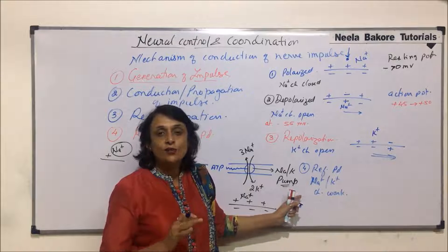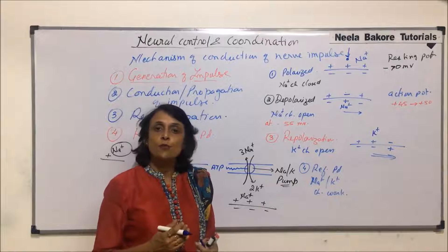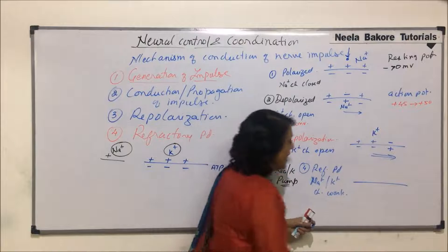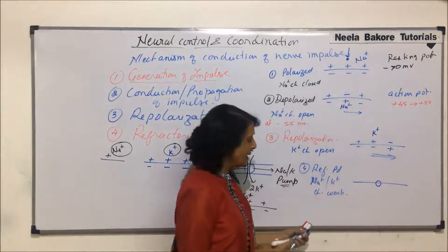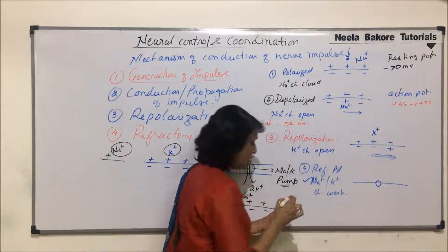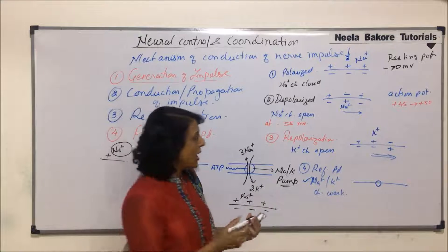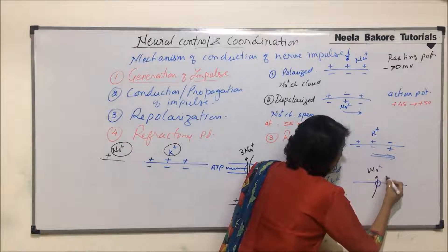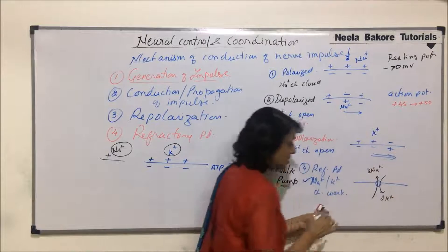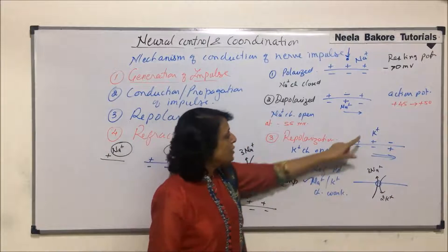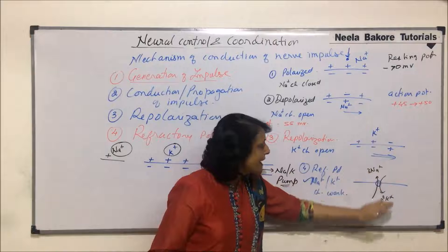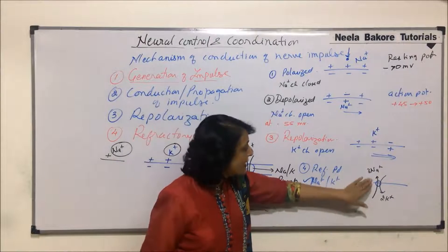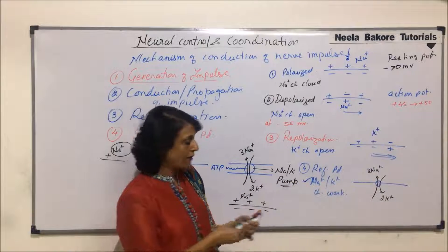After repolarization comes the refractory period. The refractory period is the correct arrangement or correct distribution of these ions. During the refractory period, the sodium-potassium pump operates. It pumps three sodium ions out in exchange of two potassium ions. Those potassium ions which went out are now taken in, and the sodium ions which were inside are sent out. By this, the correction is done.